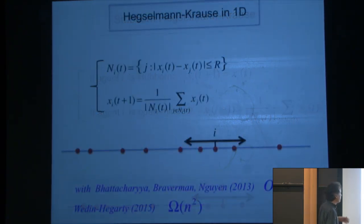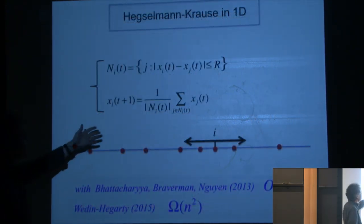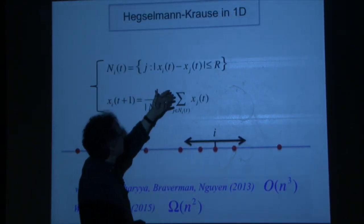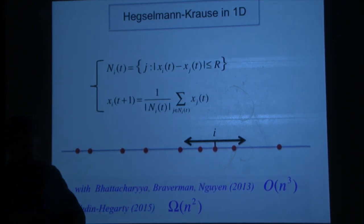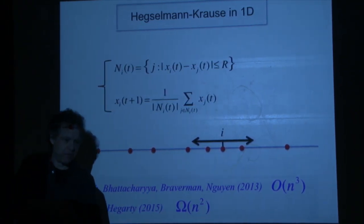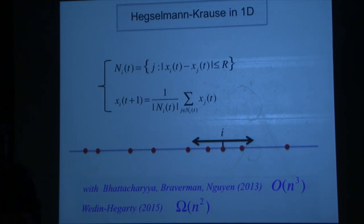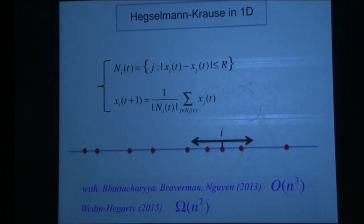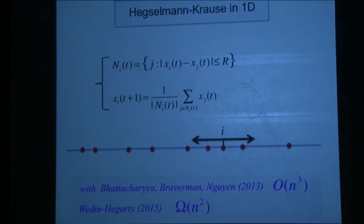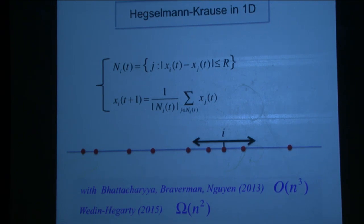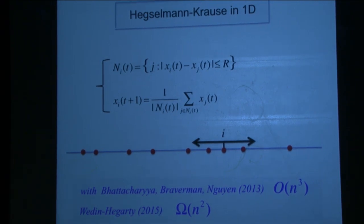What happens when you relax this model and change anything? For example, suppose there are what's called stubborn agents — the blue agents — who never move; they're fixed to the ground, not allowed to move. The others do just what they did before. Freezing means that all pairwise distances are either bigger than r or zero — some collapse. If only one cluster forms, that's called consensus; otherwise it's polarization.